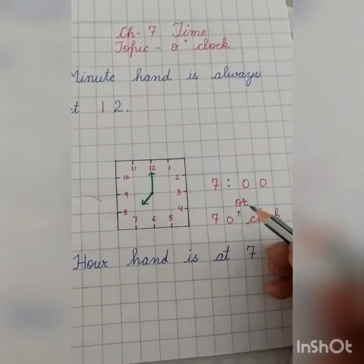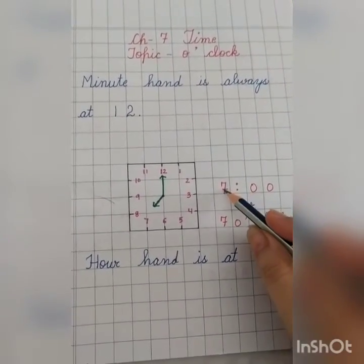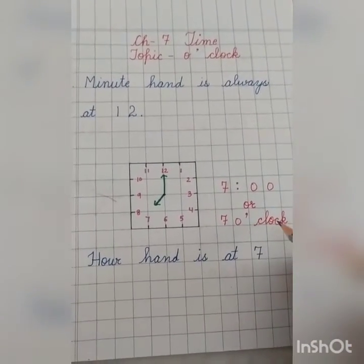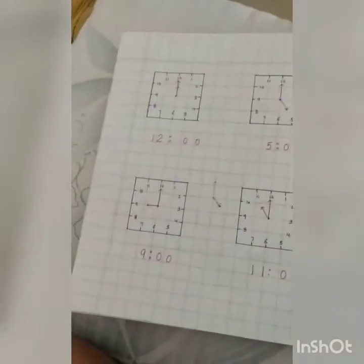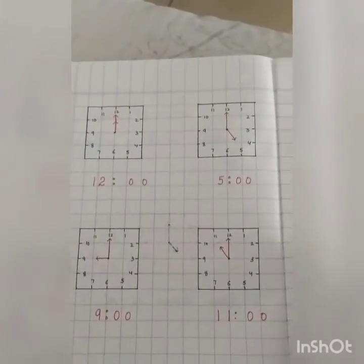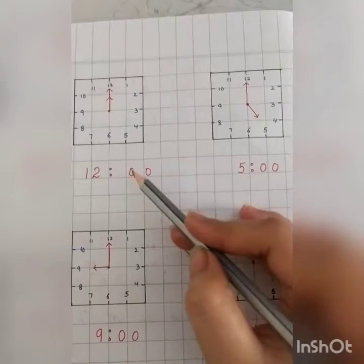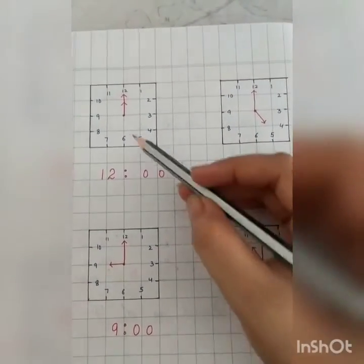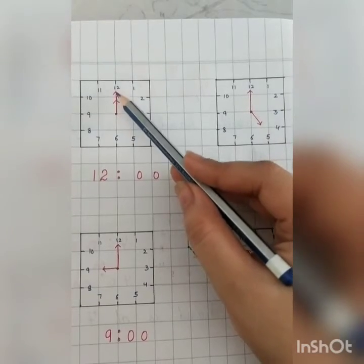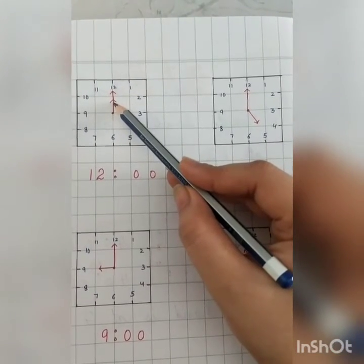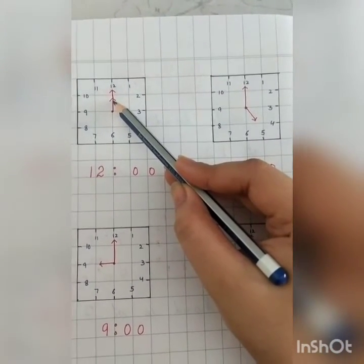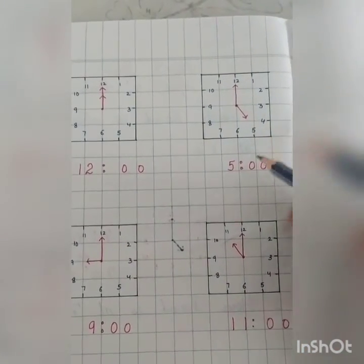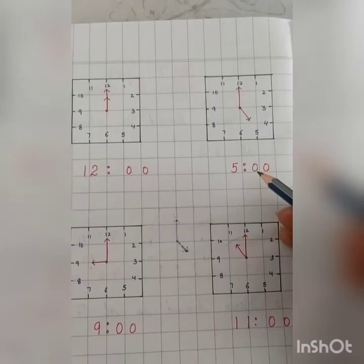We can write it two ways: seven-zero-zero, and seven o'clock. Now, for example, twelve o'clock — the minute hand and hour hand, where will both of them be? At twelve.